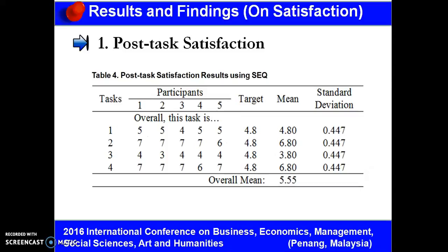The results and findings on satisfaction, as reported in Table 4, show that all targets are met except for Task 3. Participants had slight difficulty in preparing the mapping matrix, which requires practical knowledge on pedagogy and classroom assessment. Despite this, the standard deviation shows that responses do not have any major gaps or differences. The overall mean is 5.55, which is within the positive stream of the scale, implying that users experienced a perceived ease of use while using the web-based test blueprint system.